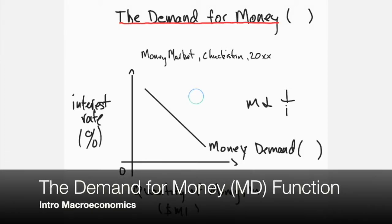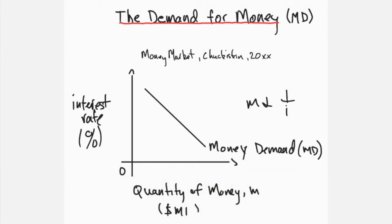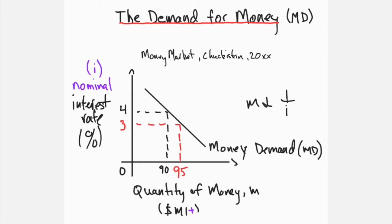The demand for money, MD, illustrates the inverse relationship — or negative correlation — between nominal short-term interest rates and the quantity of near money, M1+, in the economy. In Chakistan in 20XX, the money market has a total quantity of 90 units when nominal interest rates are 4%, and 95 units when rates are 3%. This general relationship holds across all nominal rates, with decreases in money demand resulting from increased interest rates, and vice versa.